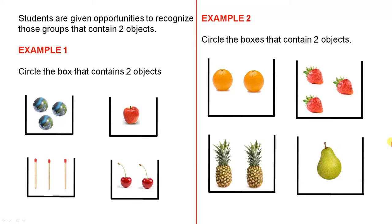Students are given opportunities to recognize those groups that contain two objects. So for the first example, students would be asked to circle the box that contains two objects.